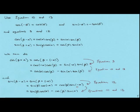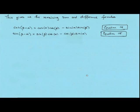We then use the odd and even identities: cosine of minus alpha becomes cosine of alpha, and sine of minus alpha becomes minus the sine of alpha. This gives us the two remaining sum and difference formulas — cosine of beta plus alpha equals cosine of alpha cosine of beta minus sine of alpha sine of beta, and sine of beta minus alpha equals sine of beta cosine of alpha minus cosine of beta sine of alpha.